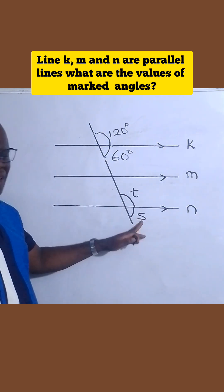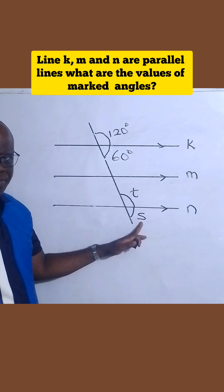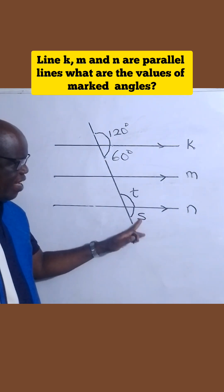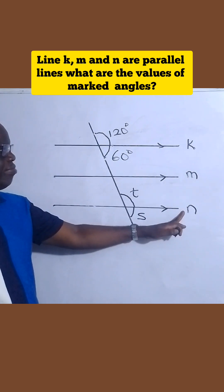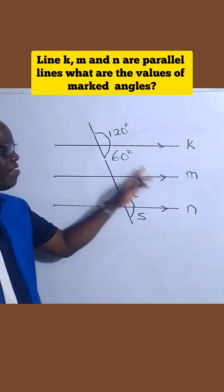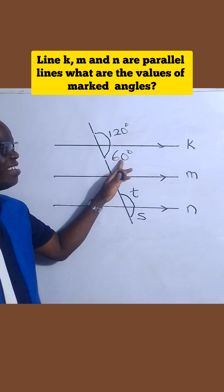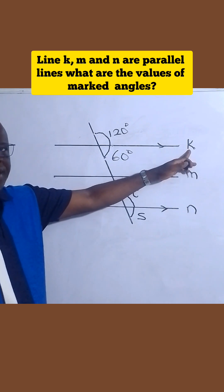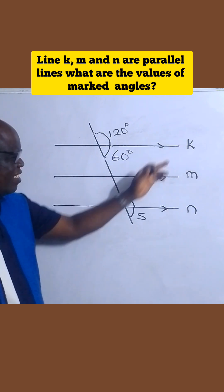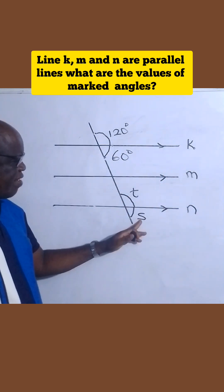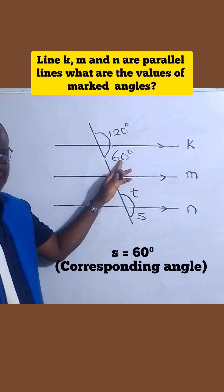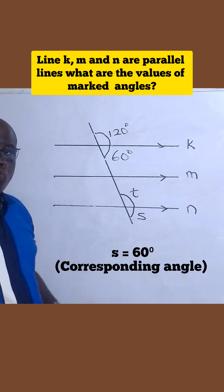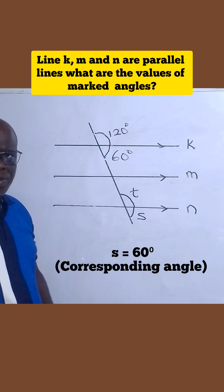Now let's look at S. S is below line N. The same thing — this 60 degree is below line K. Therefore, S is equal to 60 degrees. It is also called a corresponding angle.